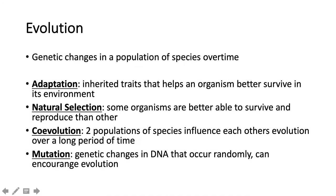Natural selection is the process that helps drive evolution within an ecosystem. Basically, some organisms are going to be better adapted at survival — they'll have better traits that help them survive, and they are most likely going to reproduce more often. If they live a long time and make lots of offspring, they're doing a good job of surviving and driving evolution.